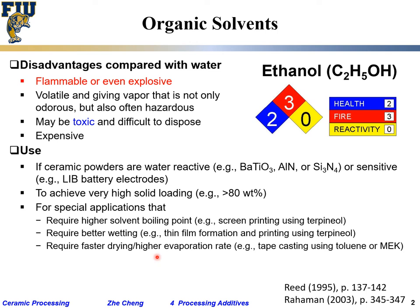Sometimes we need faster drying — unlike screen printing where you don't want fast drying, in tape casting when you cast a slurry onto a thin tape, you want it to dry relatively faster to accelerate productivity. For that you want faster evaporation, so you need a solvent with a boiling point below 100°C and higher vapor pressure. Water should also be avoided for electrical circuit applications, since it can be contaminated by salts and cause shorting everywhere.